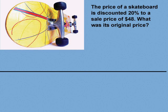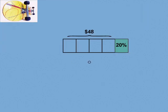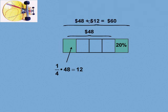A 20% discount is the same as 1 fifth off. So we draw a 5-section rectangle. The shaded section represents the 20%. The other 4 sections represent the discounted price of $48. If we divide 48 by 4, we find the dollar equivalent of the 20%, so 1 fourth of 48 is 12. The $12 is the 20% discount. Add it to the original $48 discounted price to find the original price, which is $60. This type of visual model is particularly useful when working with percents that are easily converted to fractions.